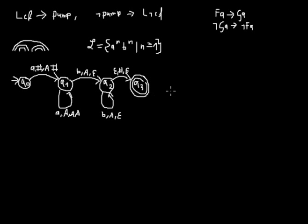In the pumping lemma for context-free languages, we have a capital N. That N is different from the n in the language, because that n is a variable that shows you at which number of occurrences a's and b's have. The N in the pumping lemma is just a constant — it has nothing to do with the language, and it has nothing to do with the automaton. But let's pretend that N had something to do with the automaton and would be the number of states.